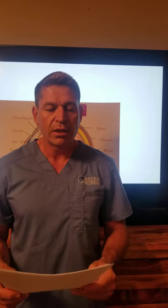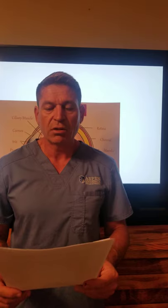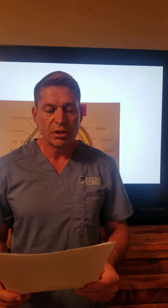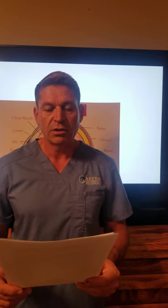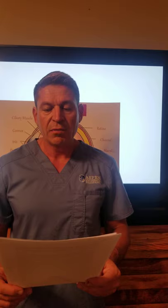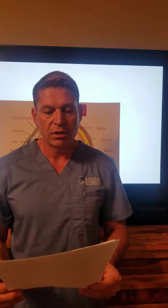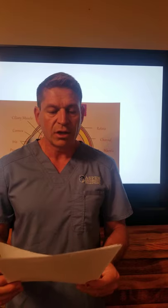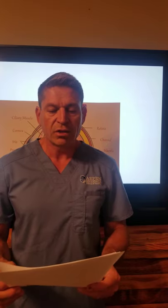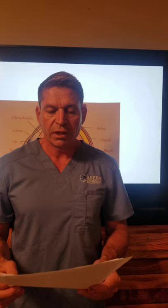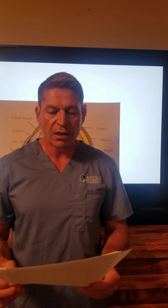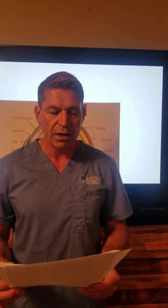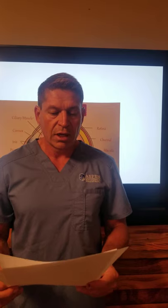Glaucoma is diagnosed by tonometry, which measures the intraocular pressure. Imaging tests show optic damage, checking fields of vision loss. Pachymetry measures the thickness of the cornea. Treatment consists of managing the condition with medication that increases the flow of fluids out of the eye, reduces production of fluid in the eye, and lowers the intraocular pressure. There is also laser surgery and installation of drainage tubes to reduce the pressure.